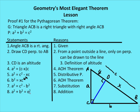Adding B squared to both sides, we get A squared plus B squared equals C squared, which is our Pythagorean theorem. That's the first proof for the Pythagorean theorem.